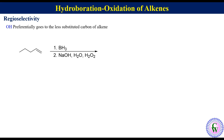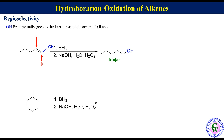Example of hydroboration oxidation of 1-pentene: C2 has one substituent while C1 has zero, so OH will preferably go to C1 to produce 1-pentanol as the major product. Another example: hydroboration oxidation of methylenecyclohexane. Here the ring alkenic carbon has two substituents while the exomethylene carbon has zero, so OH will preferably go to the exomethylene carbon to produce cyclohexanemethanol as the major product.